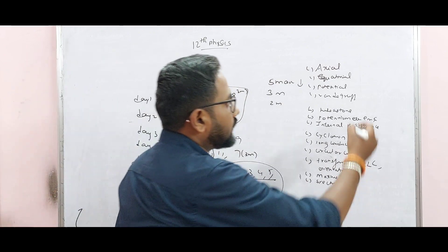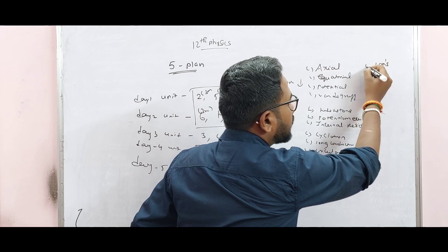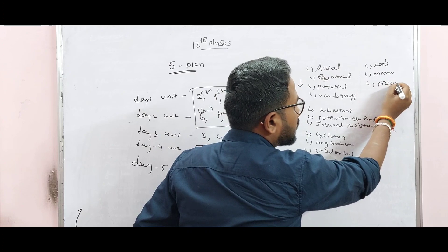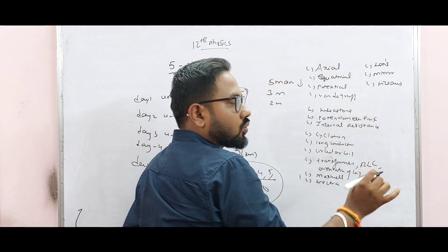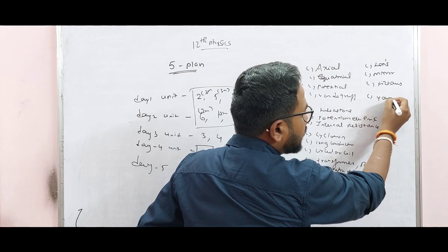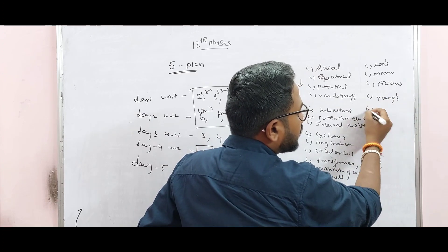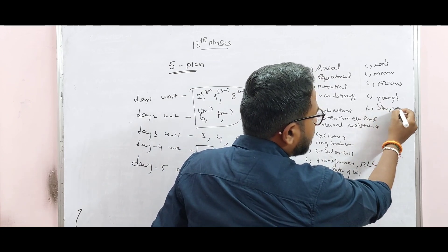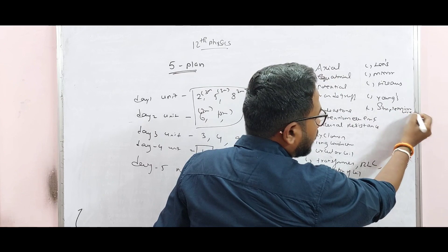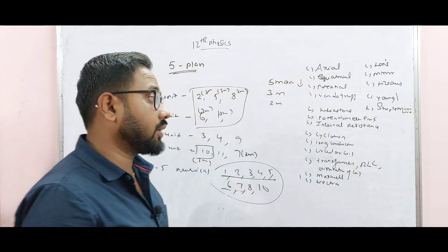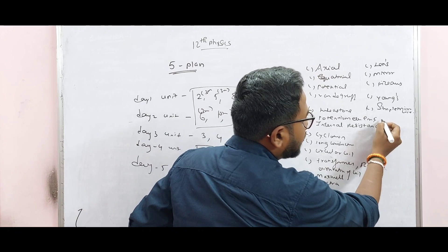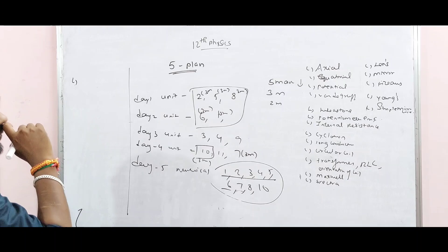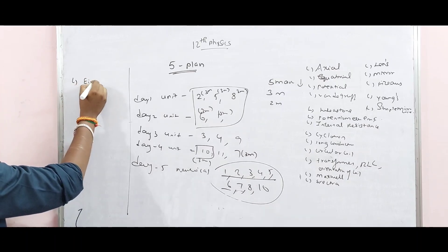Emission Spectra and Absorption Spectra — that is the first volume. Second volume: Lens Maker's Formula, Mirror Equation, Fissures Method. Unit 7: Young's Double Slit experiment, Bandwidth. Simple Microscope, Compound Microscope.